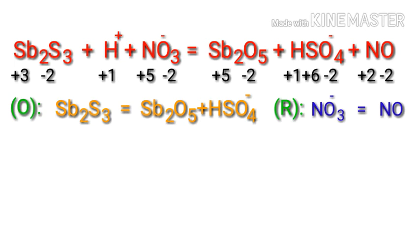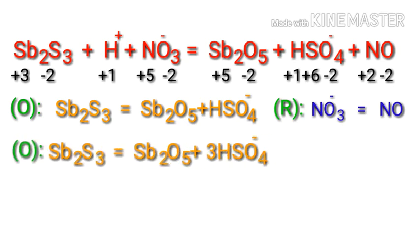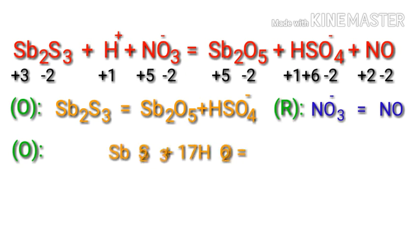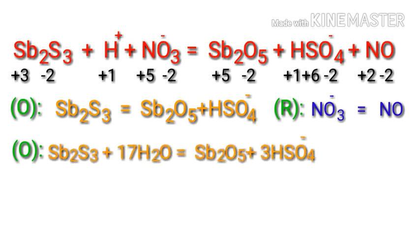Now you can balance the number of atoms in the two half-reactions. In the oxidation half-reaction, to balance the sulfur atoms, we need to put a coefficient of 3 in front of HSO4⁻. The sulfur atoms are now balanced. Now we need to balance the oxygen atoms — you can add water molecules to the other side.